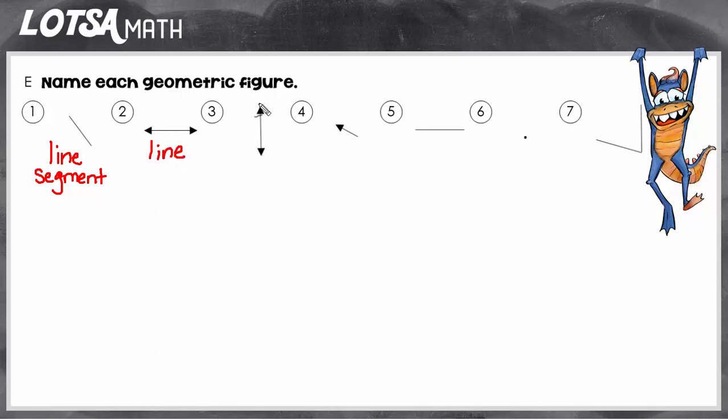Number three, even though this figure is turned a different way, it's still straight and it still has the arrows showing that it goes forever in that direction. So number three is also a line.